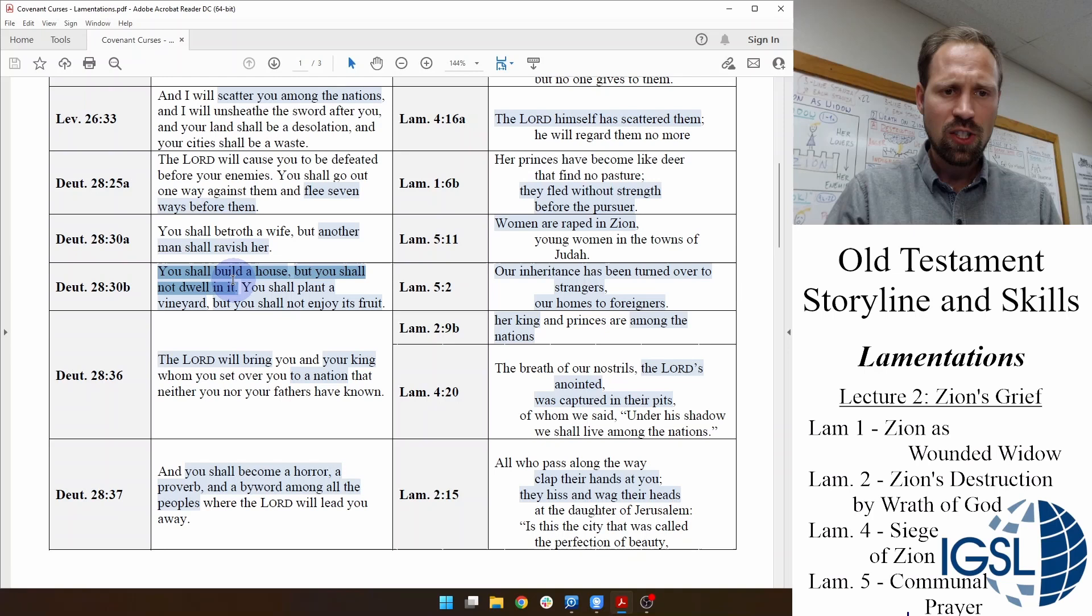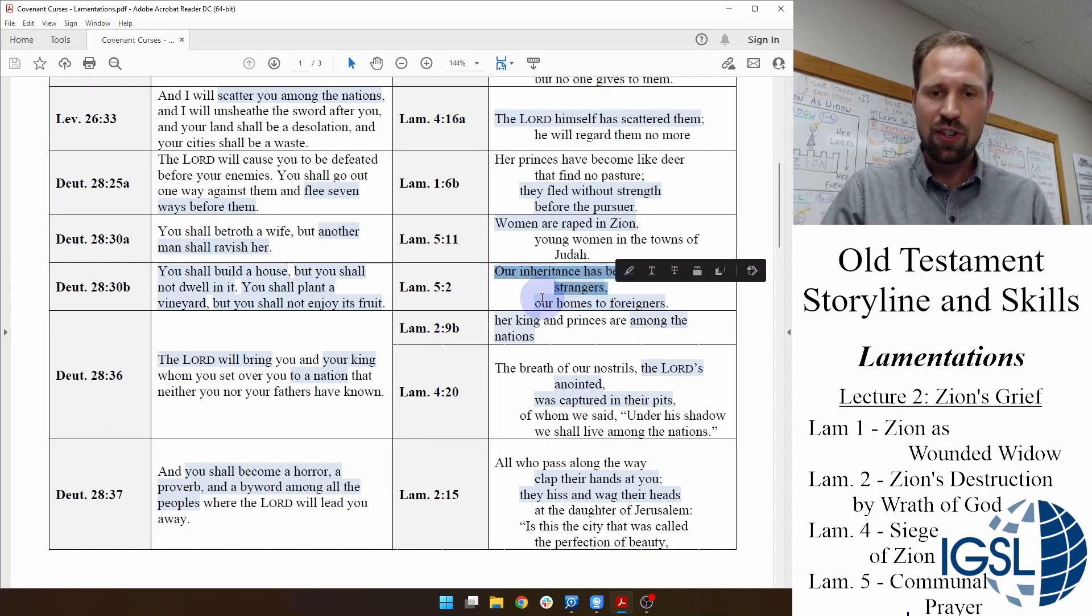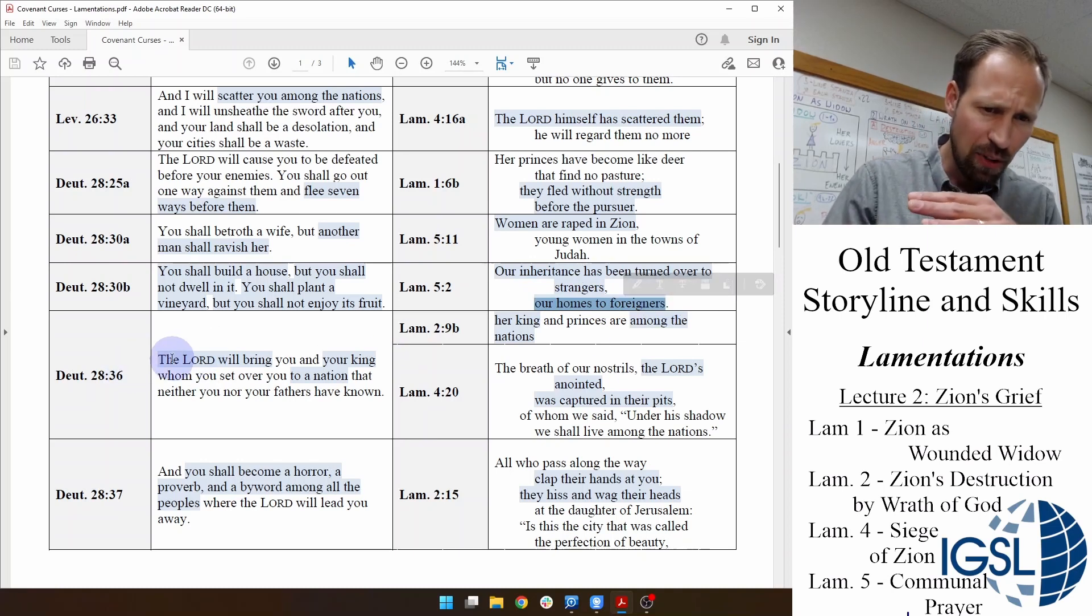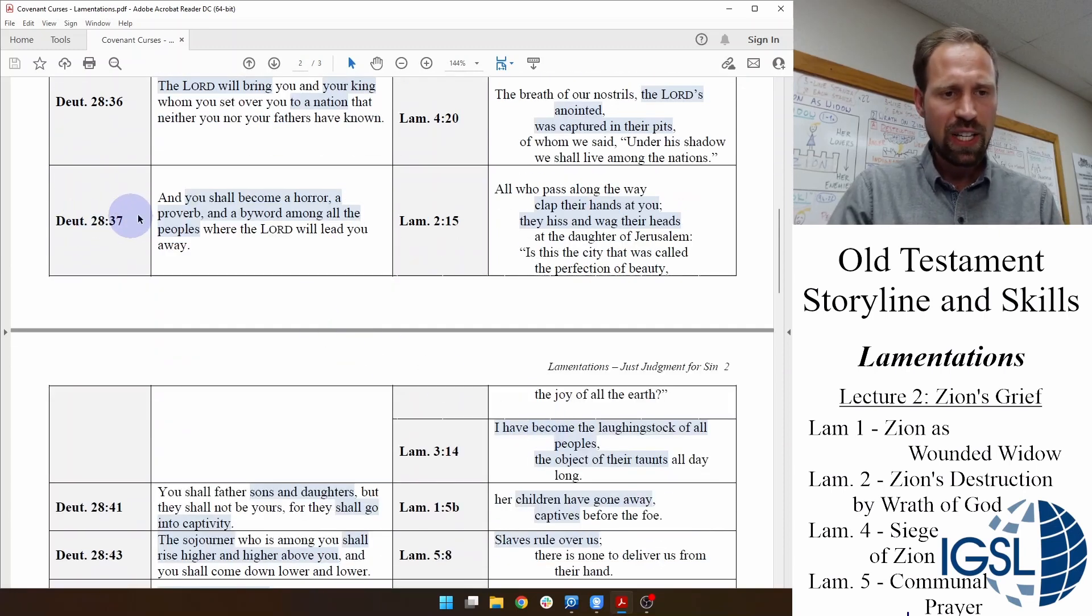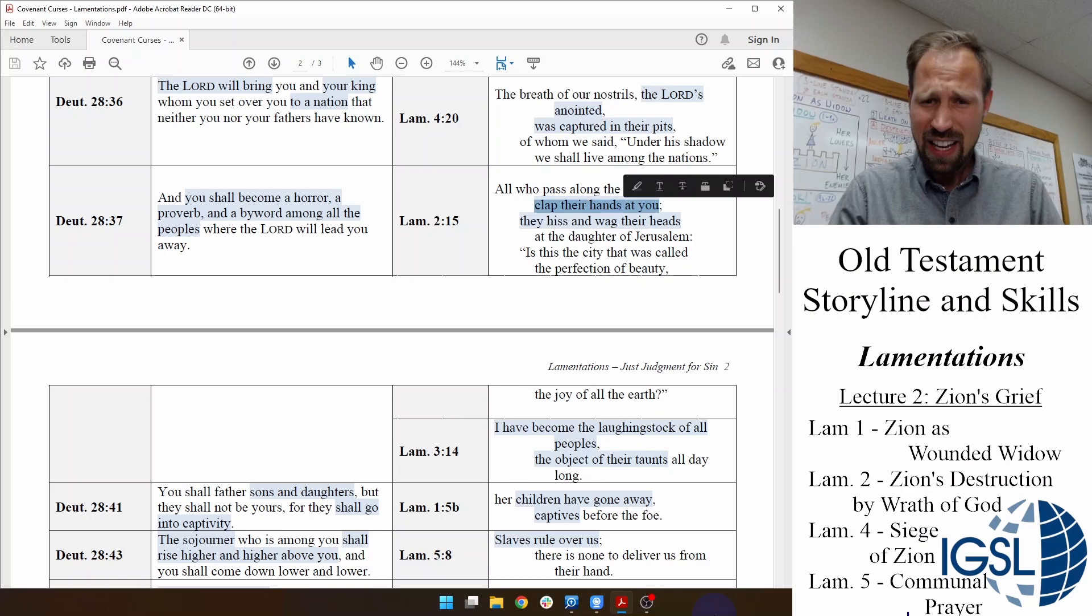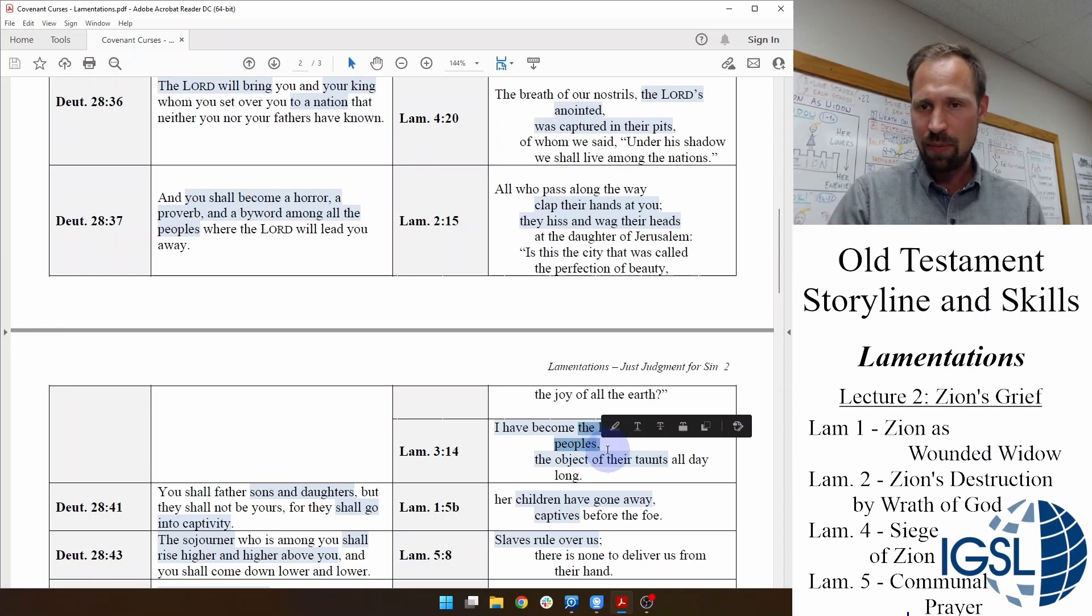Back to Deuteronomy 28. You will build a house, but you will not dwell in it. You shall plant a vineyard, but you shall not enjoy its fruit. For our inheritance, the poet says in Lamentations 5, will be turned over to strangers, our homes to foreigners. The Lord will bring your king to another nation. And look at this. Her king is among the nations. The Lord's anointed, that is the king, was captured in their pits. Deuteronomy 28:37, you will become a horror, a proverb, a byword. Look at this. Lamentations 2, they will clap your hands at you and hiss and wag their heads. I have become a laughingstock to all peoples.